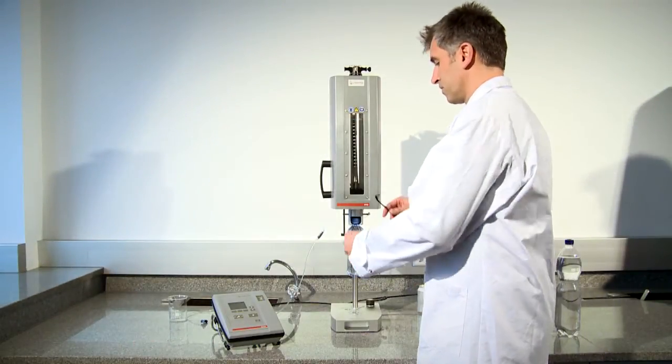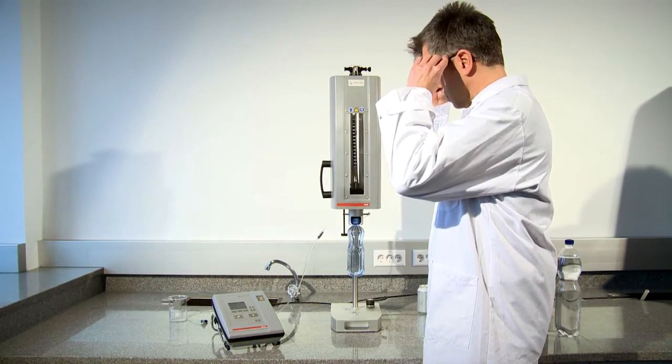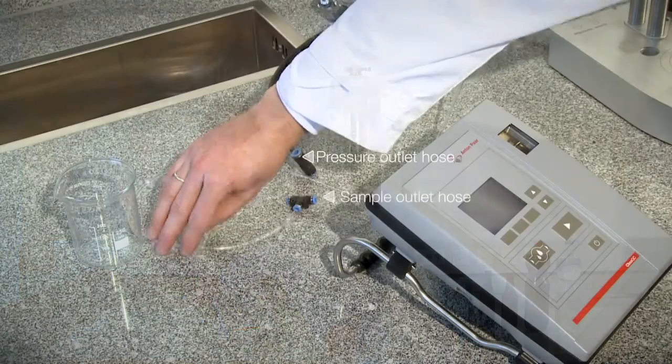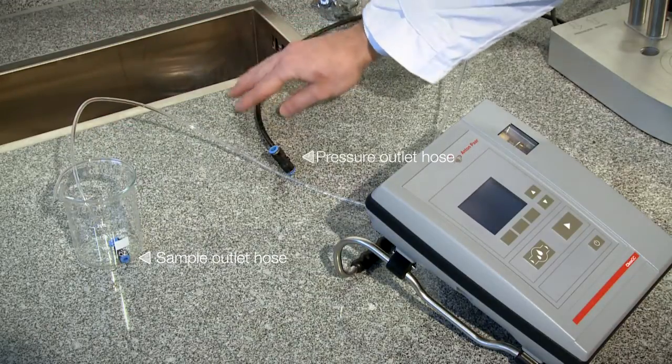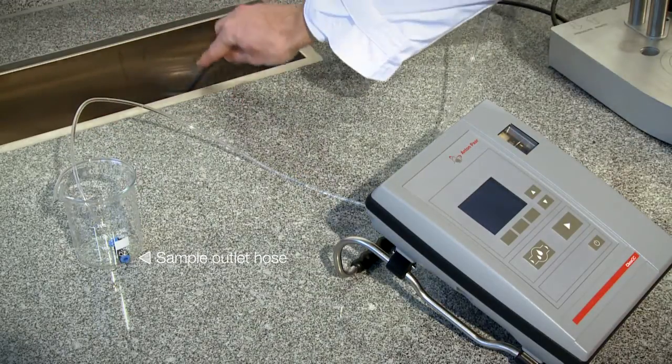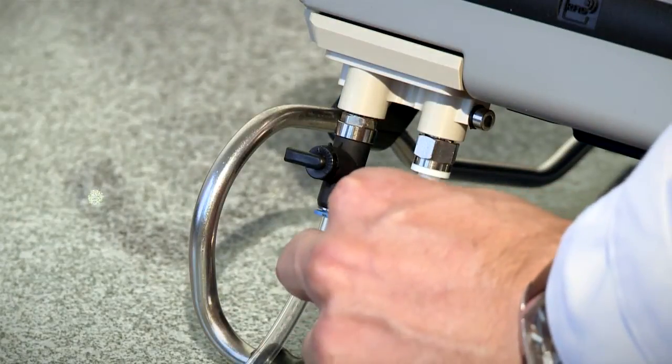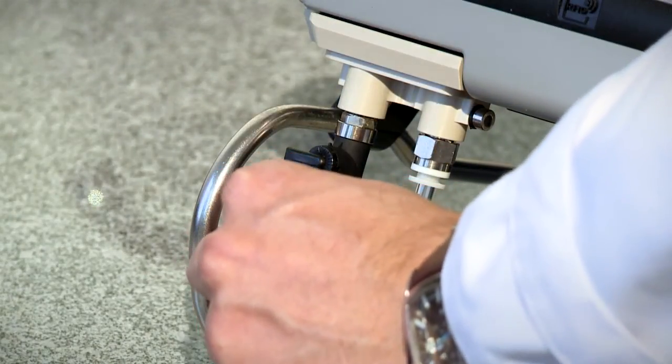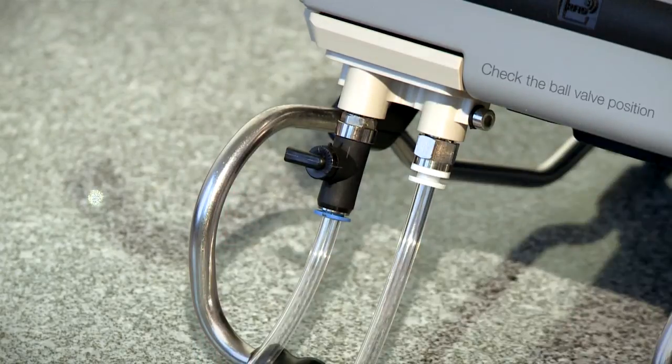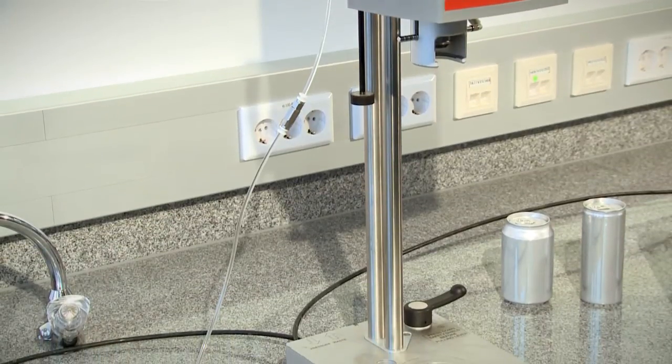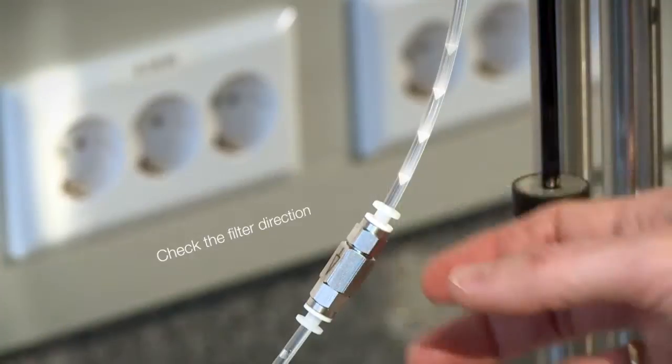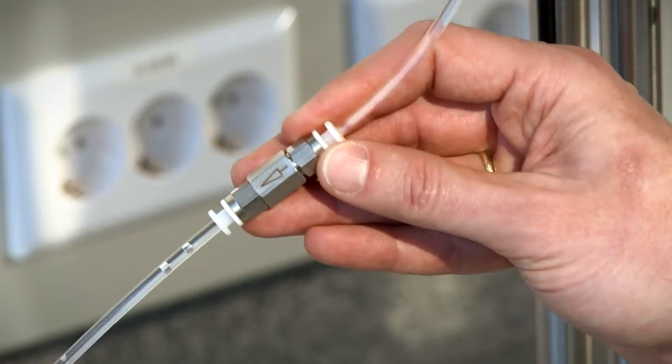You can start a measurement after a few short steps only. First, lead the sample and the pressure outlet hoses into a waste vessel. Make sure that all hoses are tightly fixed. The ball valve in the back is fixed in the position you see here, and that the filter between the PFD and the instrument's sample inlet is correctly implemented.